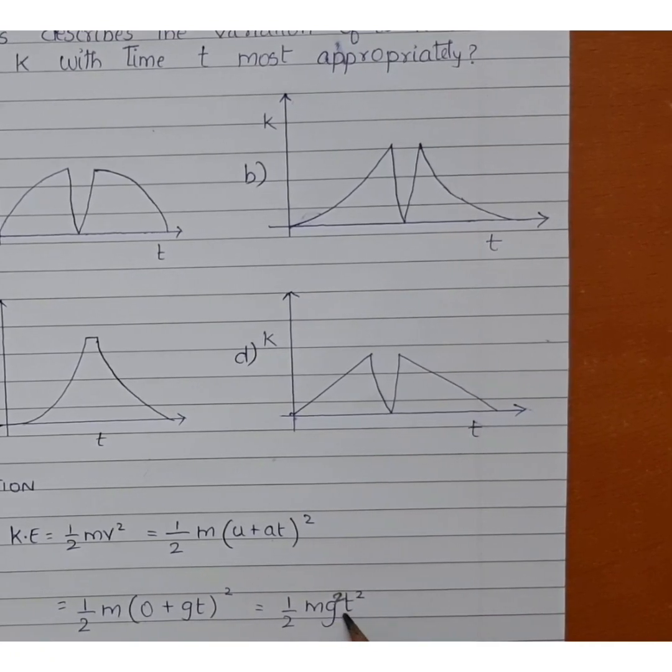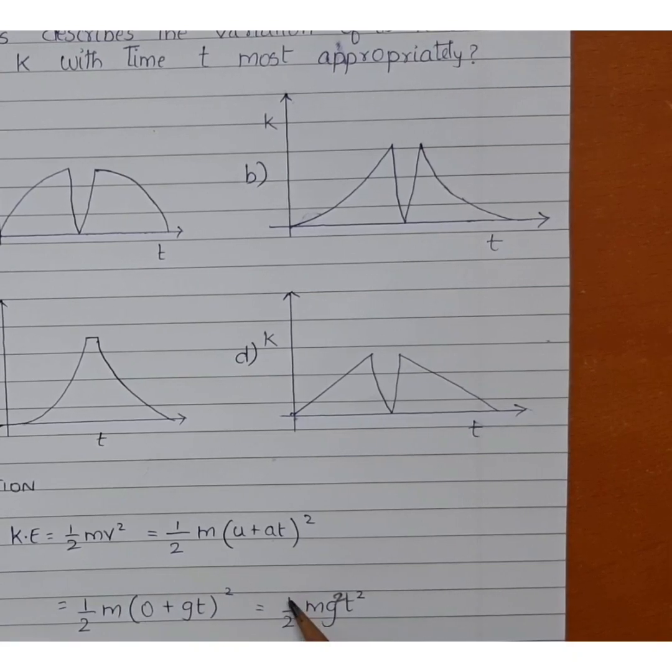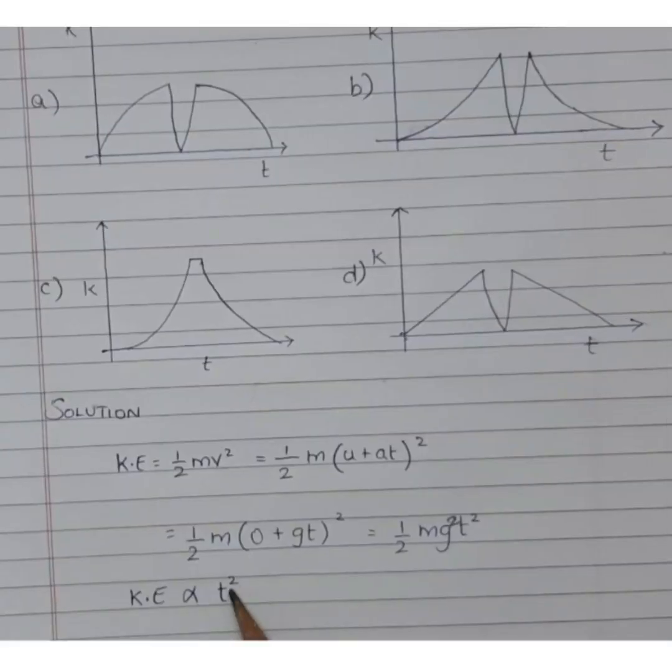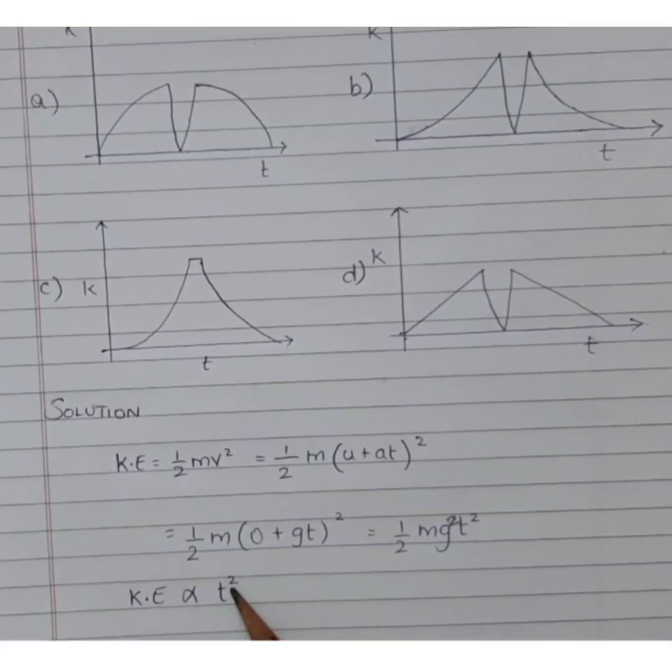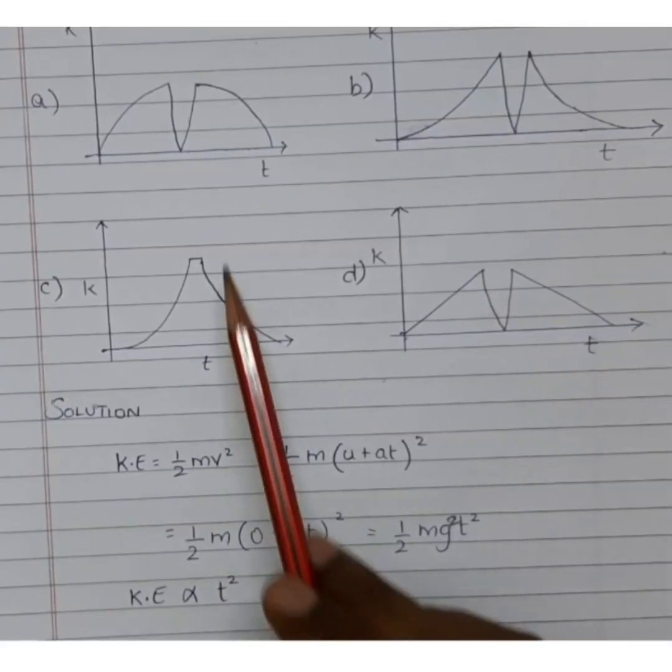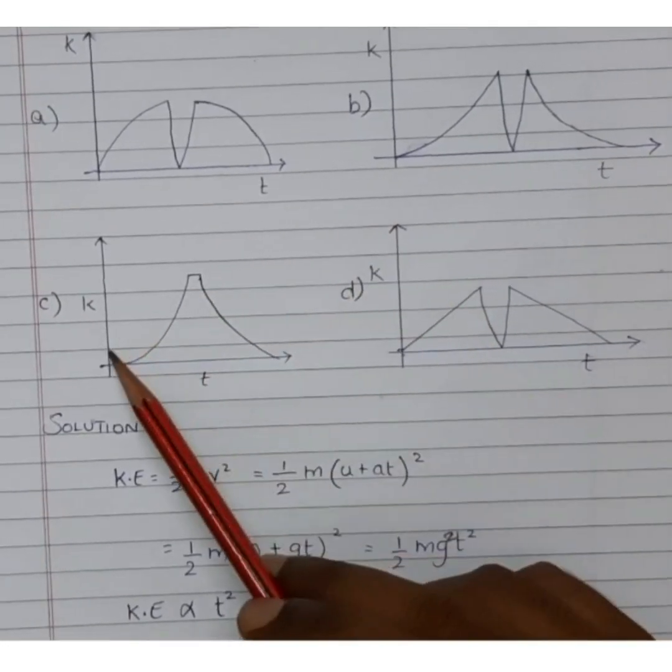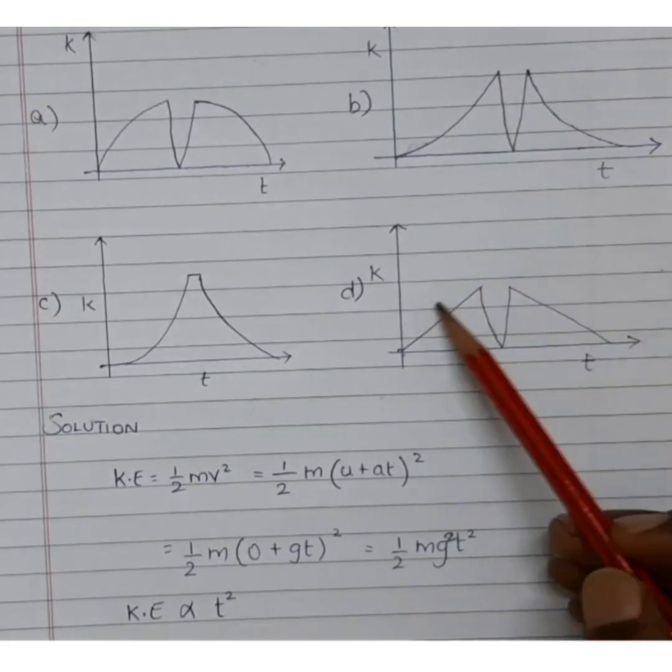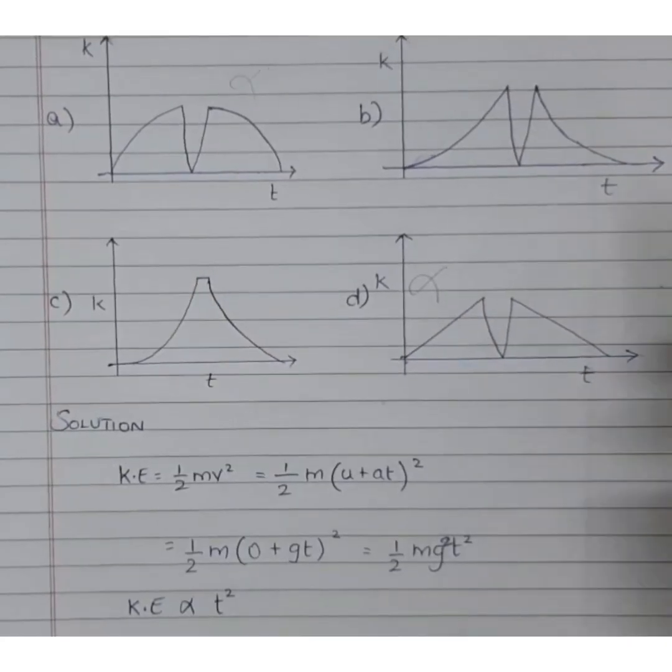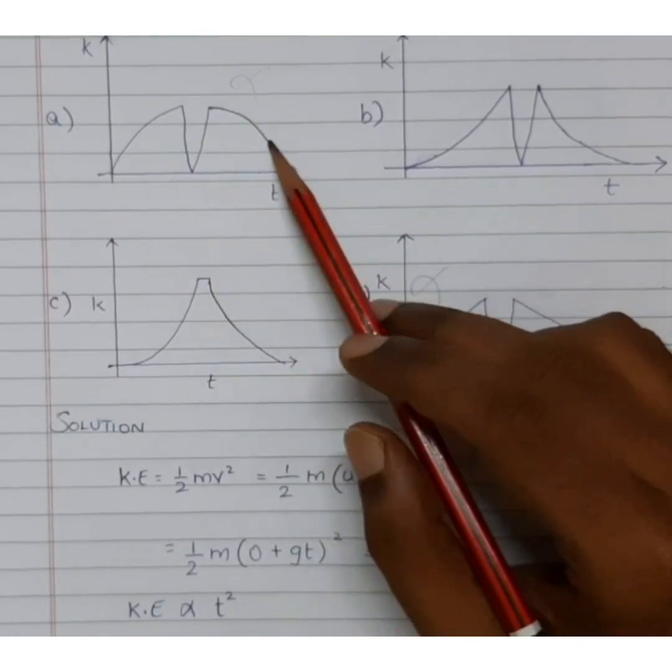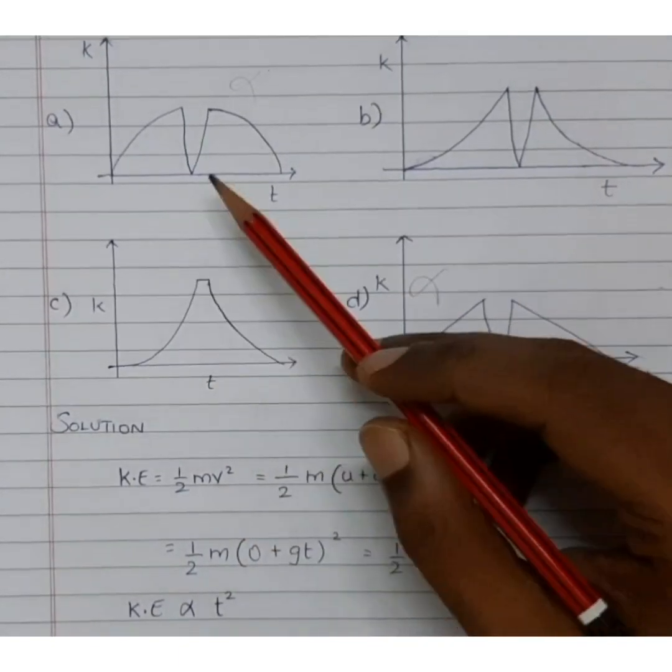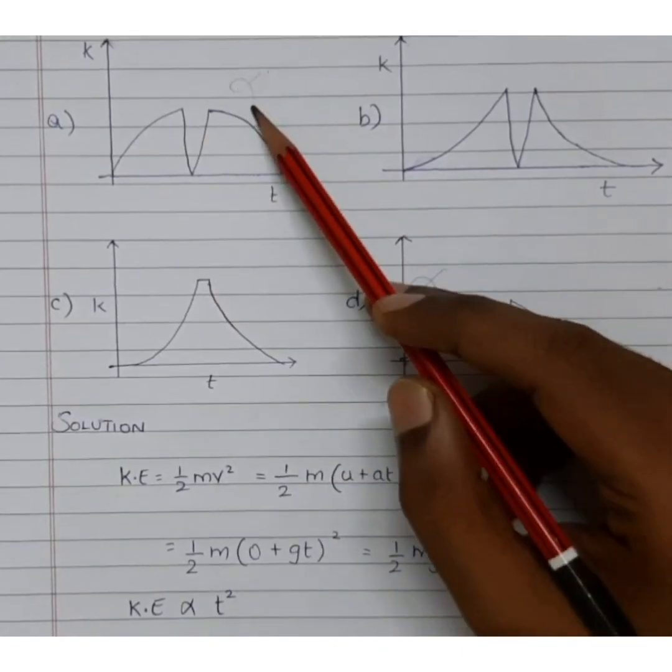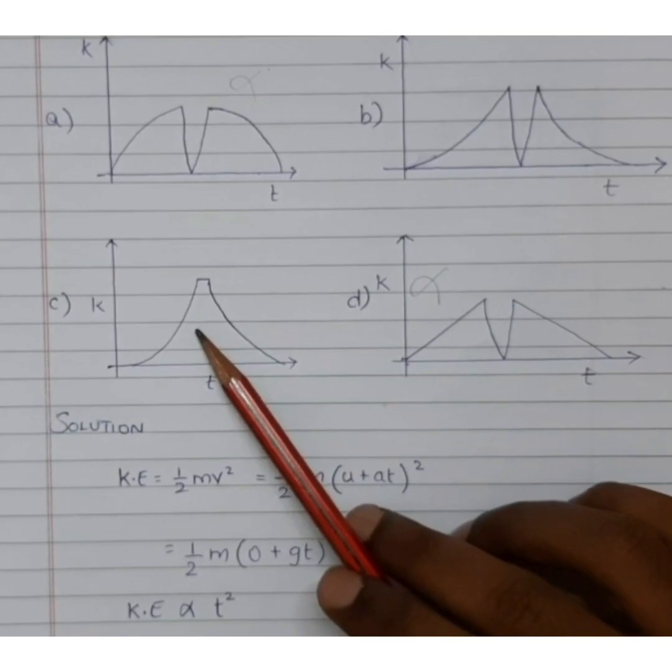So here m is constant, g is also constant, 1 by 2 is also constant. So kinetic energy is directly proportional to t square. That is a parabolic curve. In the options, we have only two parabolic curves. In option C we have a parabola and in option B we have a parabola. This is a straight line, so ruled out. Option A seems to be a parabola but KE equals t square is open upwards parabola. But here it is open downwards parabola so this is also ruled out. So either B or C should be the correct answer.